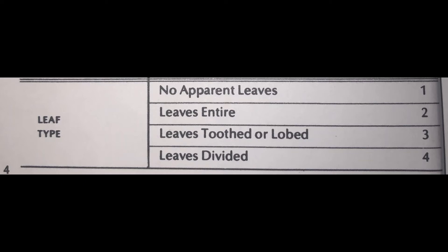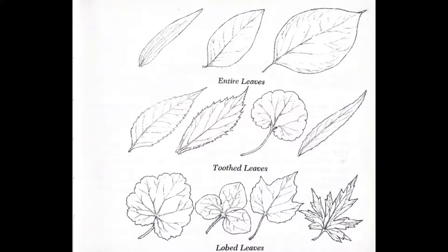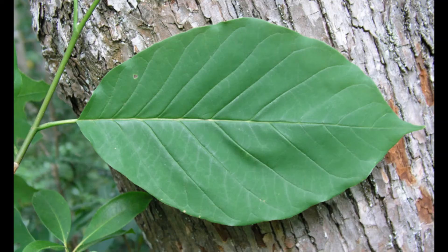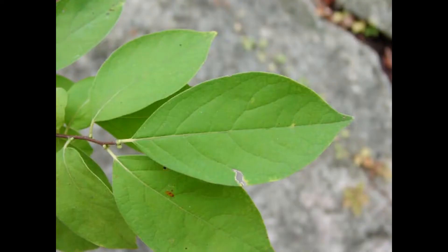The final identification for Newcomb's method is determining the plant's leaf type. If the margin of your leaf is even and unbroken, then your leaf is entire. Entire leaves have smooth edges and they do not have any teeth or divots.